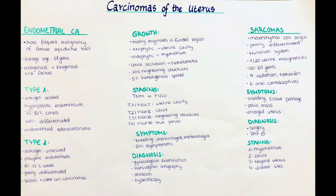Treatment of uterine sarcomas involves surgical removal of the tumor, usually followed by radiation therapy. Radiation therapy can also be used alone, either internally or externally. Progestins can also be used as a hormone therapy.